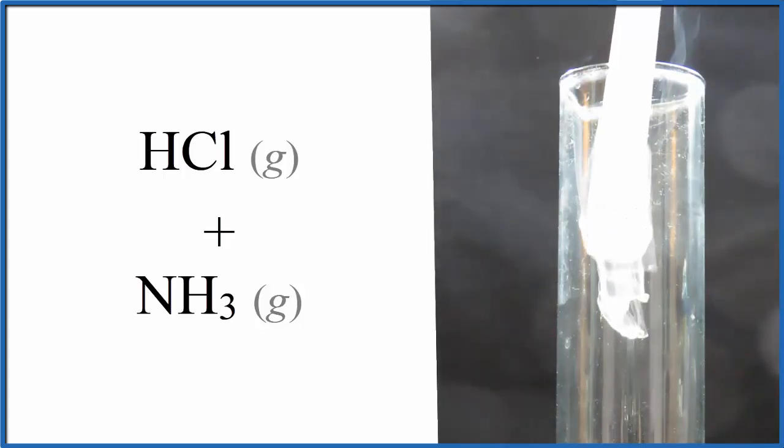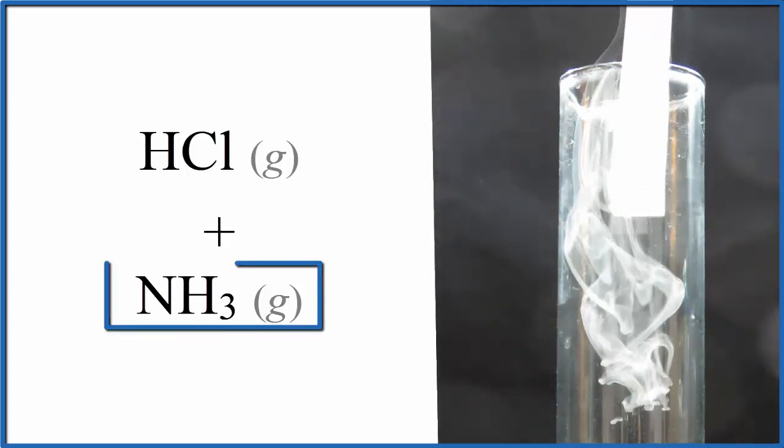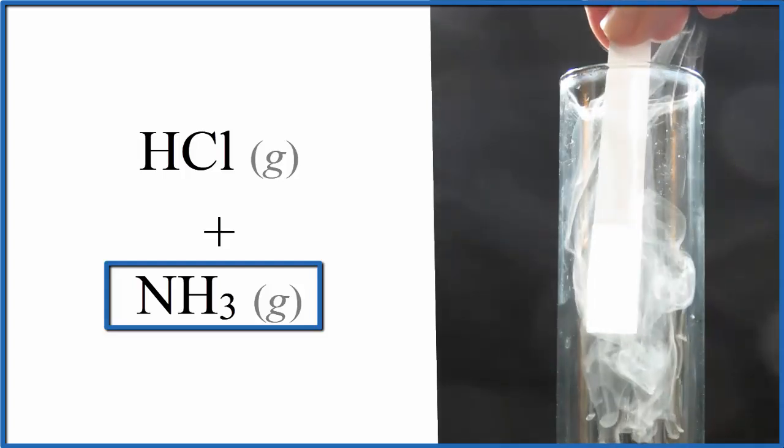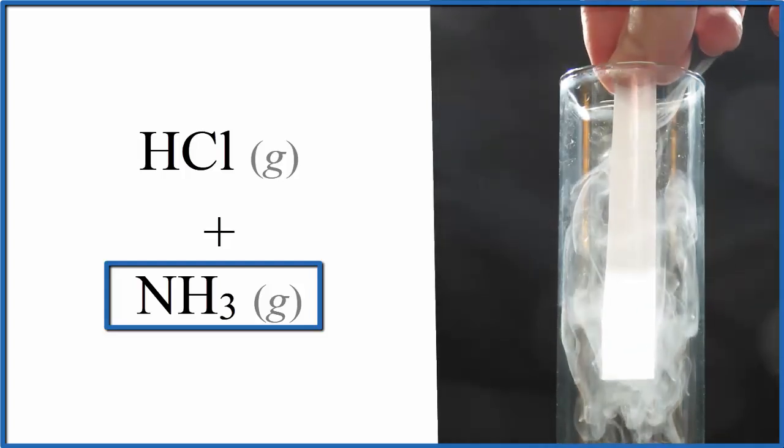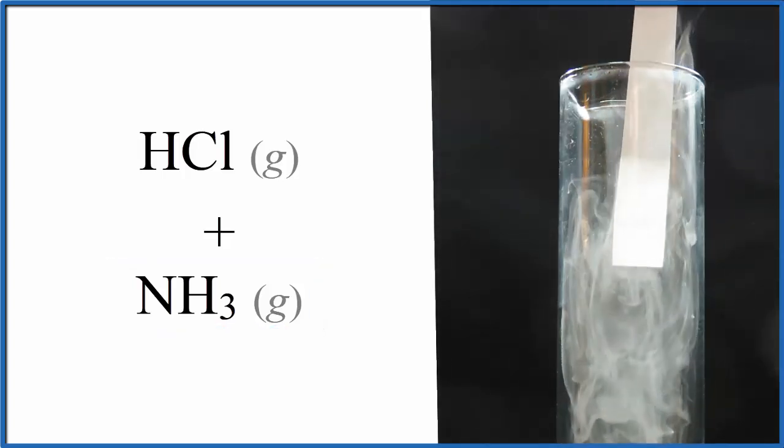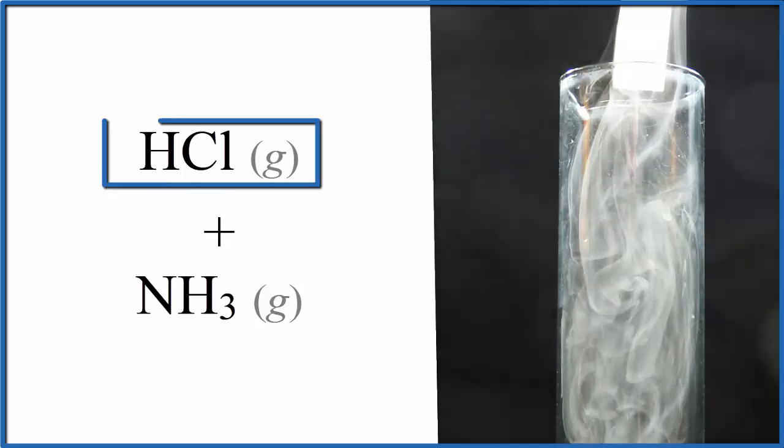So in the glass cylinder, I have ammonia gas, NH3 gas, and the paper, that white paper, I've dipped that in concentrated hydrochloric acid, so the fumes coming off are hydrogen chloride gas.